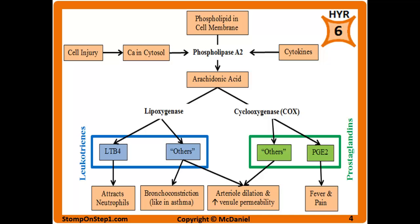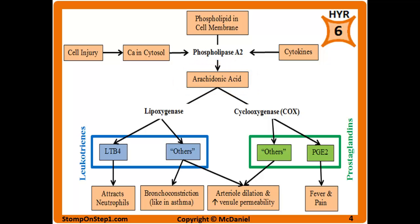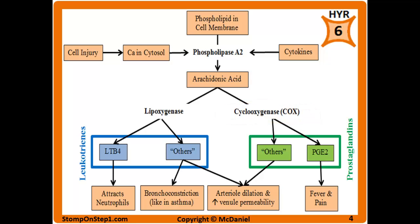Now we can talk about leukotrienes and prostaglandins. Arachidonic acid is turned into prostaglandins and leukotrienes. Arachidonic acid is created when cell membrane phospholipids are acted upon by phospholipase A2, which is triggered by certain cytokines or calcium spilled into the cytosol as a result of cellular injury. Once you have arachidonic acid, it can be acted on by cyclooxygenase (COX) to give prostaglandins, or by lipoxygenase to give leukotrienes.